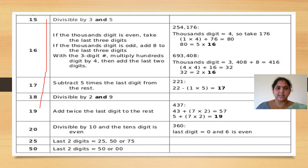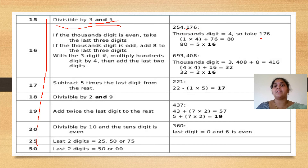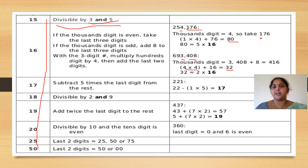Divisibility rules for 15, 16, 17, 18, 19, 20, 25, and 50 are listed here. For 15, check divisibility by 3 and 5. For 16: if the thousands digit is even, take the last 3 digits — multiply the hundreds digit by 4 and add the last 2 digits; for example, 1 times 4 plus 76 equals 80, which is a multiple of 16. If the thousands digit is odd, multiply by 4 and add — getting 32, which is a multiple of 16.